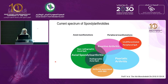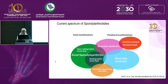Under axial spondyloarthritis, we have two subgroups. Patients who present with symptoms and have obvious damage to the sacroiliac joints on plain X-ray are called radiographic axial spondyloarthritis, the same as ankylosing spondylitis. Those with symptoms but without obvious damage in the sacroiliac joints are classified as non-radiographic axial spondyloarthritis.